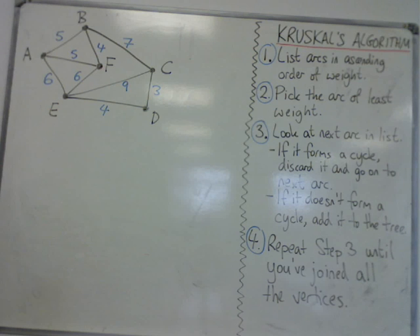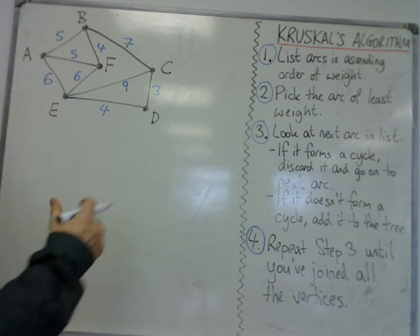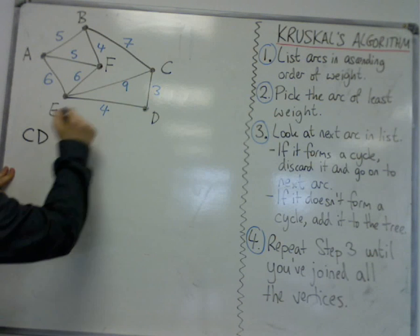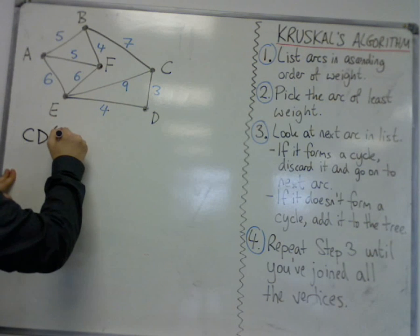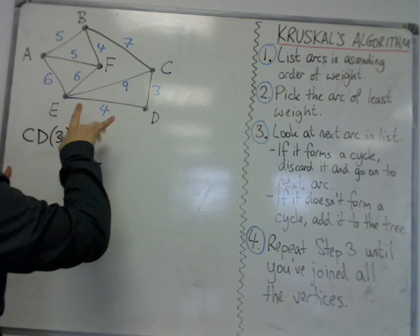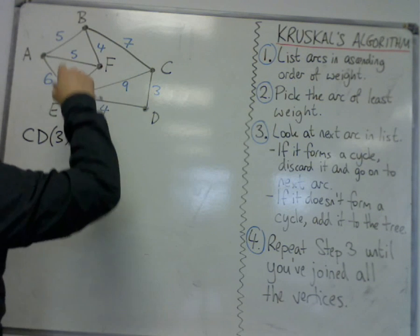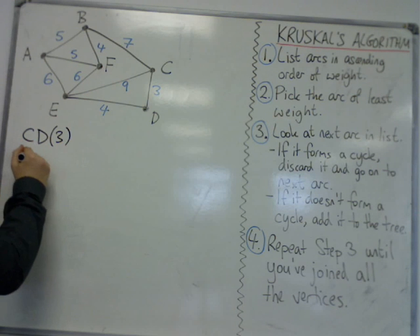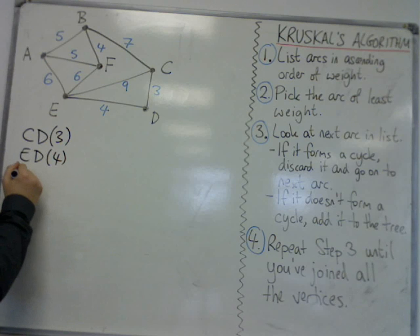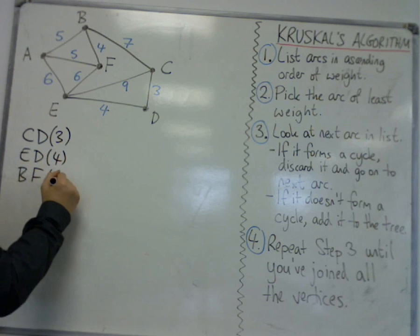From the smallest to the largest. So you've got to look at the graph that you've been given and write them down so that CD, for example, is the least at three. And then we've got ED and BF—they're both on four. It doesn't matter in which order you write them down.